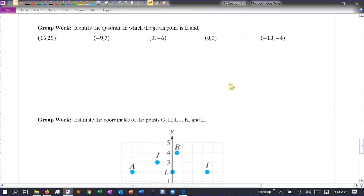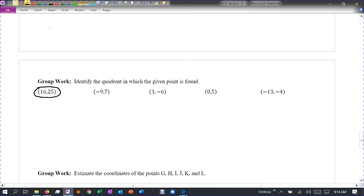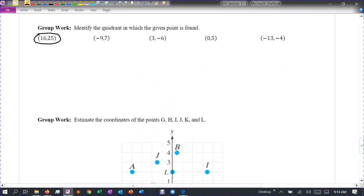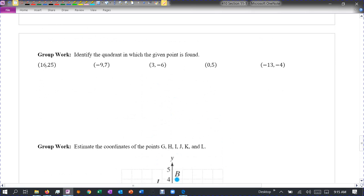And then this last part of the group work is to just try and identify these points. So what is the point, identify which quadrant. Sorry. So both of these are positive. That means I go to the right and up. All right. So here's my, I'm just thinking about this. I would go to the right 16 and up 25. So I would be in quadrant one.